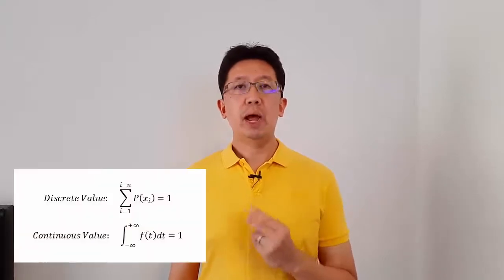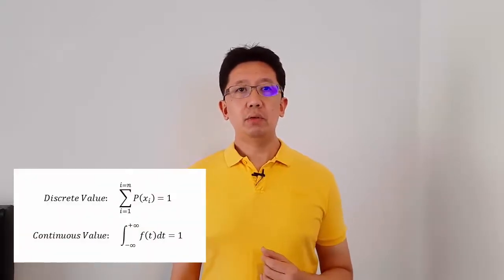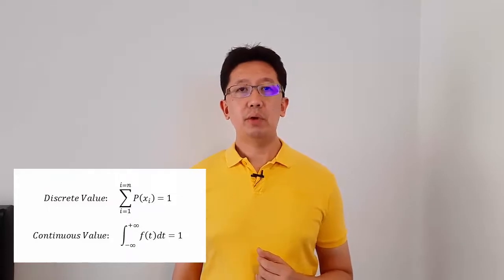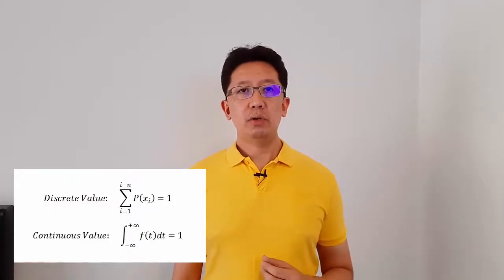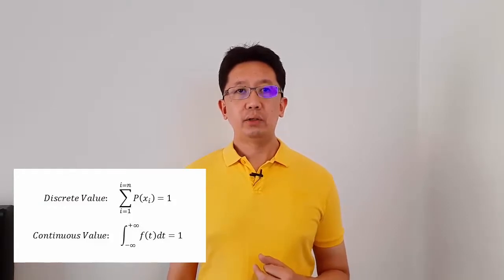Random events are classified into two types. The first is the discrete variable, where only certain values are available, and the second is the continuous value, calculated as a numerical value within a range.